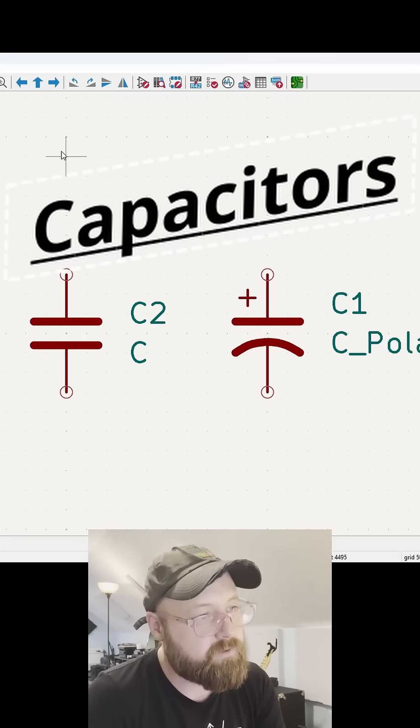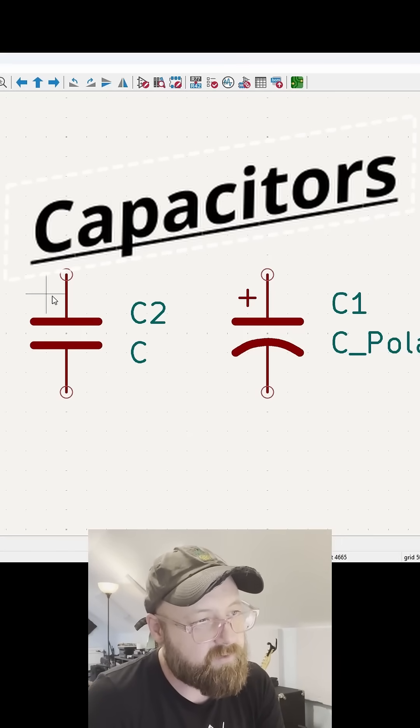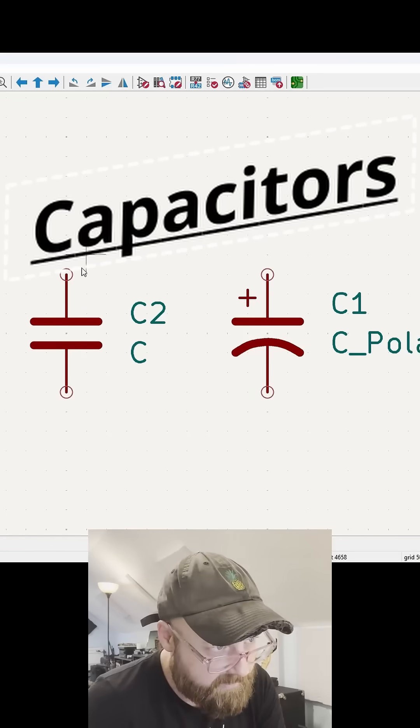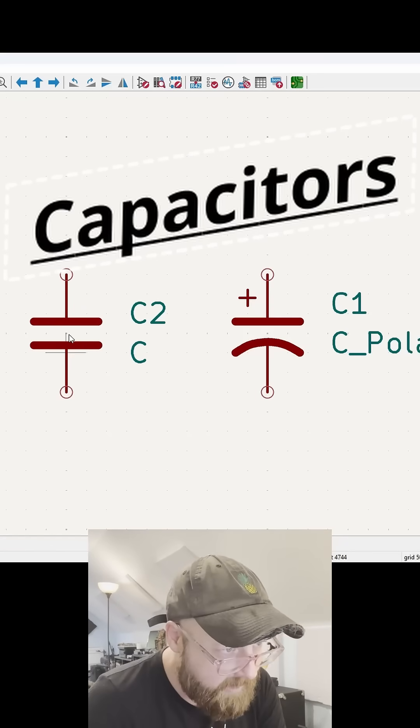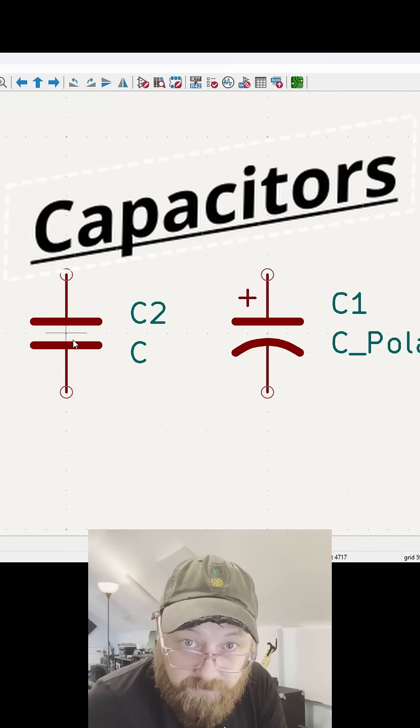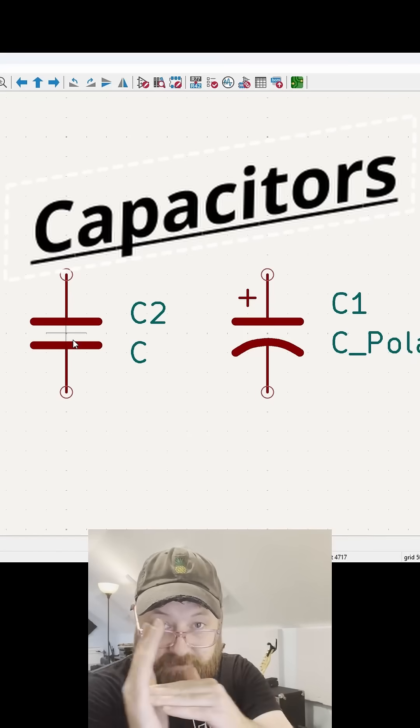So basically, electricity will come in and let's say we have five volts hits this end. But it will not pass through because it's like hitting an elastic film.